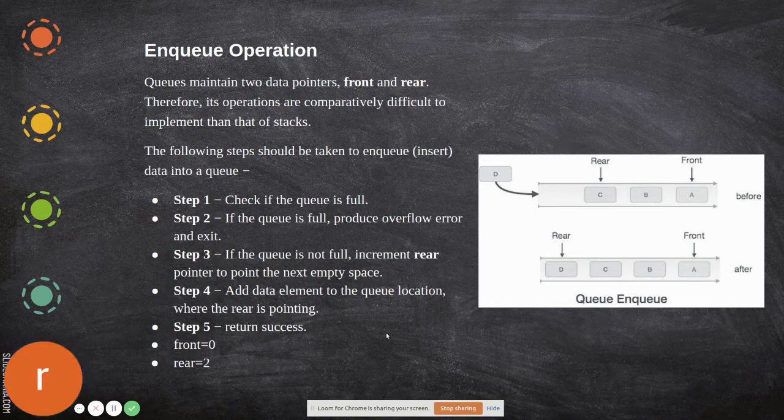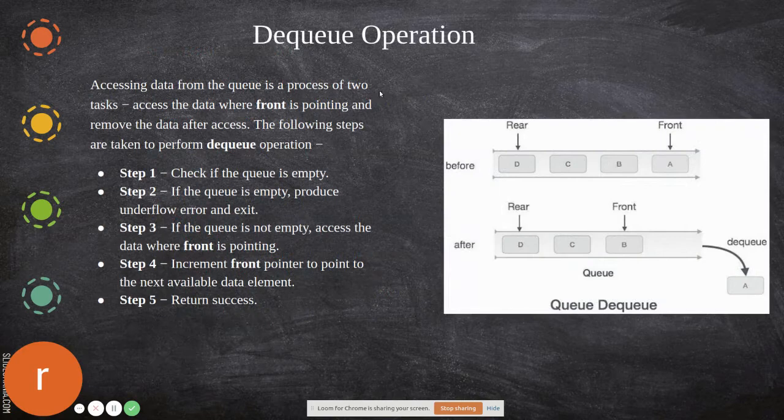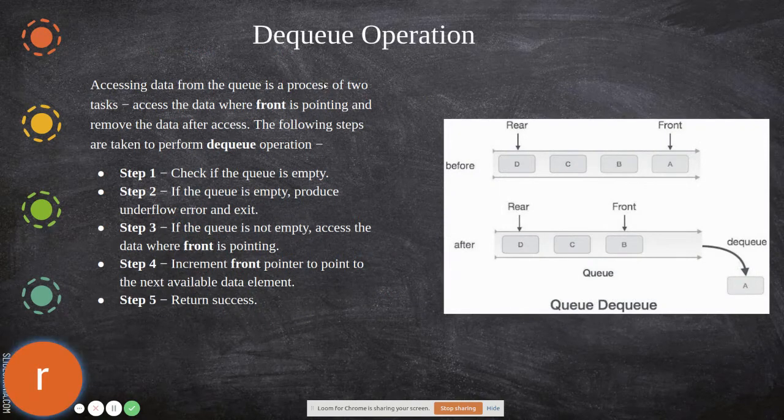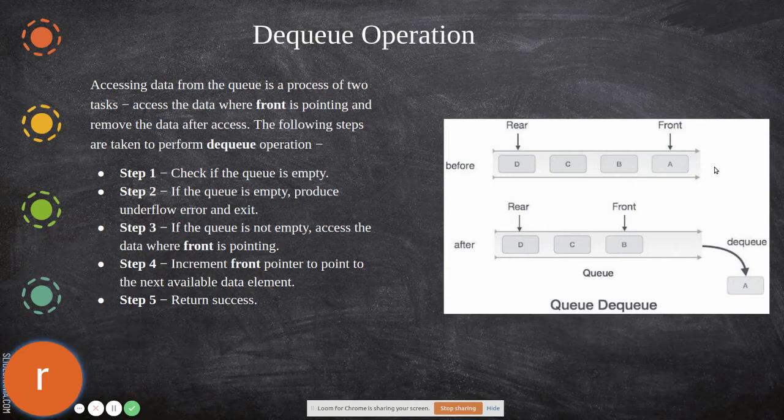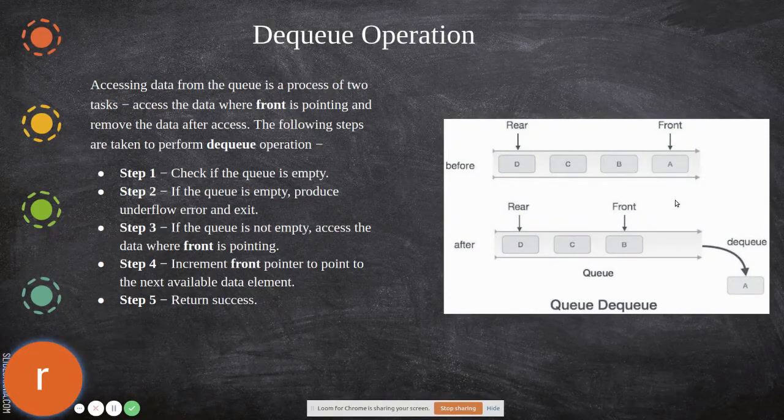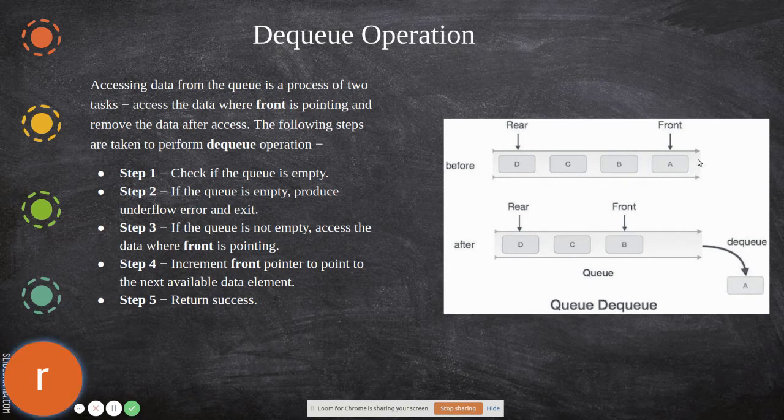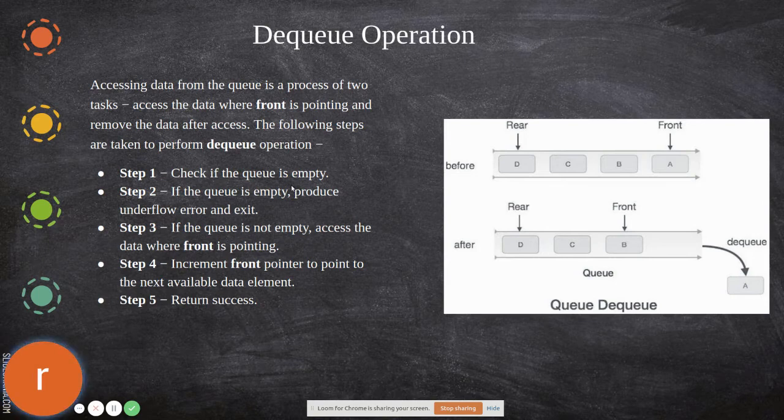Next is the dequeue operation. Before removing anything, check whether any data is there. You can only remove an element if data is present. First, check if the queue is empty. If empty, return an error message. Otherwise, store the value